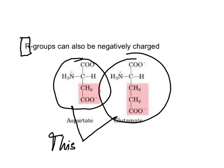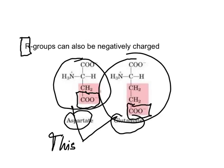R groups can also be negatively charged. Here we have aspartate and glutamate, and here again we have a carboxylic acid group, and this carboxylic acid group carries a negative charge.